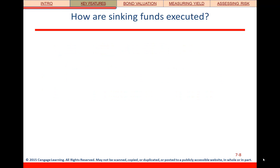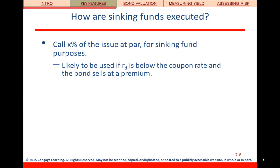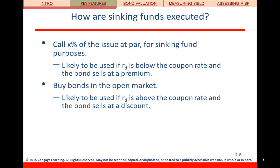How does the sinking fund work mechanically? The issuer could call a certain percentage of the issue at par for sinking fund purposes. That's likely if the cost of debt rd is below the coupon rate, meaning the bond sells at a premium. Or they could buy bonds in the open market if the reverse is happening — meaning the yield is above the coupon rate and the bond is selling at a discount.